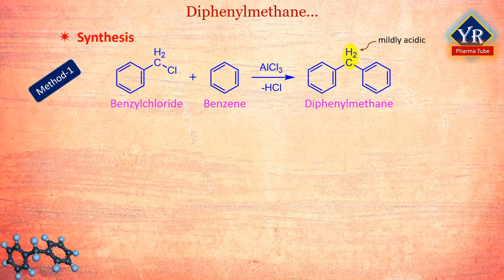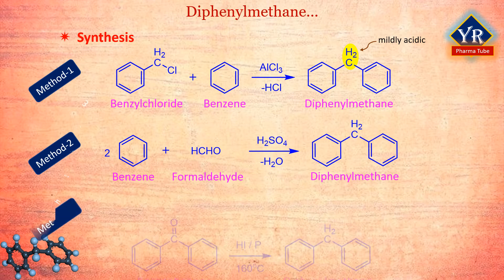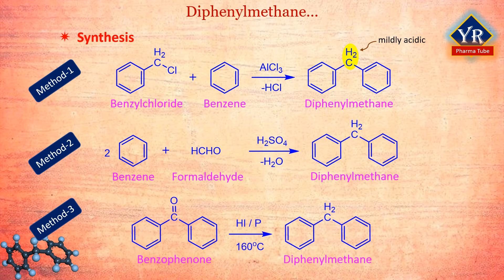The methylene group in diphenylmethane is mildly acidic. Diphenylmethane is also obtained by the condensation of one molecule of formaldehyde and two molecules of benzene in the presence of concentrated sulfuric acid. It is also prepared by heating benzophenone with hydroiodic acid and red phosphorus at 160 degrees under pressure.